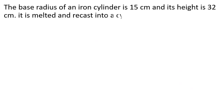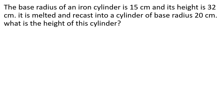The base radius of an iron cylinder is 15 cm and its height is 32 cm. It is melted and recast into a cylinder of base radius 20 cm. What is the height of this cylinder? One iron cylinder: base radius is 15 cm, height is 32 cm. After melting, base radius is 20 cm.